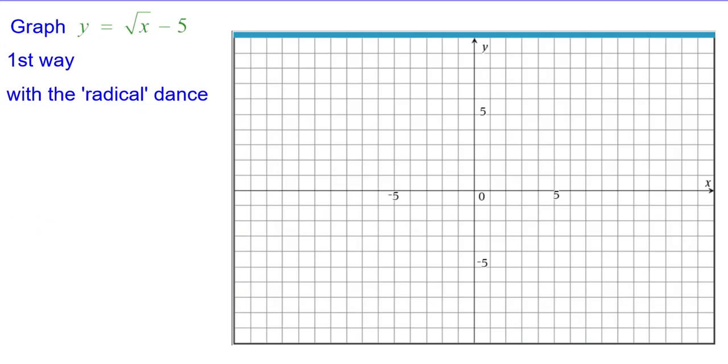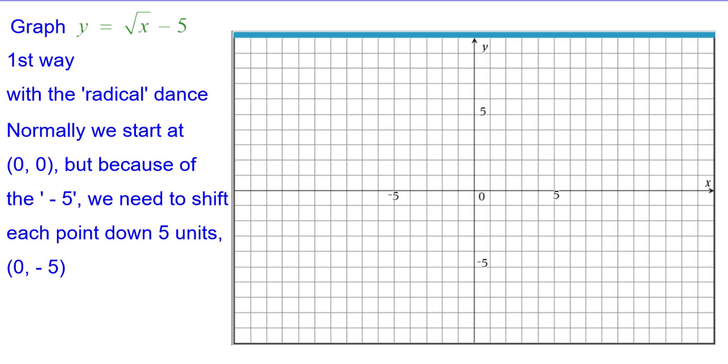So the first way is something called the radical dance. Normally we'd start at the origin, but because of the minus 5, we need to shift each point down 5 units. So we're going to start at 0, negative 5.